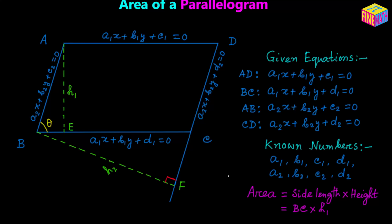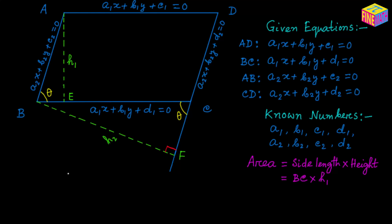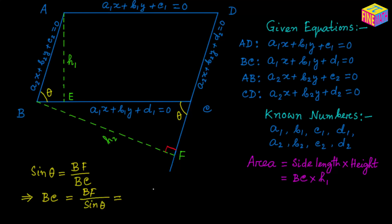Now if angle ABC is equal to theta, then angle BCF will also be equal to theta. If that is the case, then BF over BC equals sine of theta, because triangle BCF is a right triangle with hypotenuse BC. From there we can say BC equals BF over sine of theta, and since we denote BF as H₂, we can write it as H₂ over sine of theta.